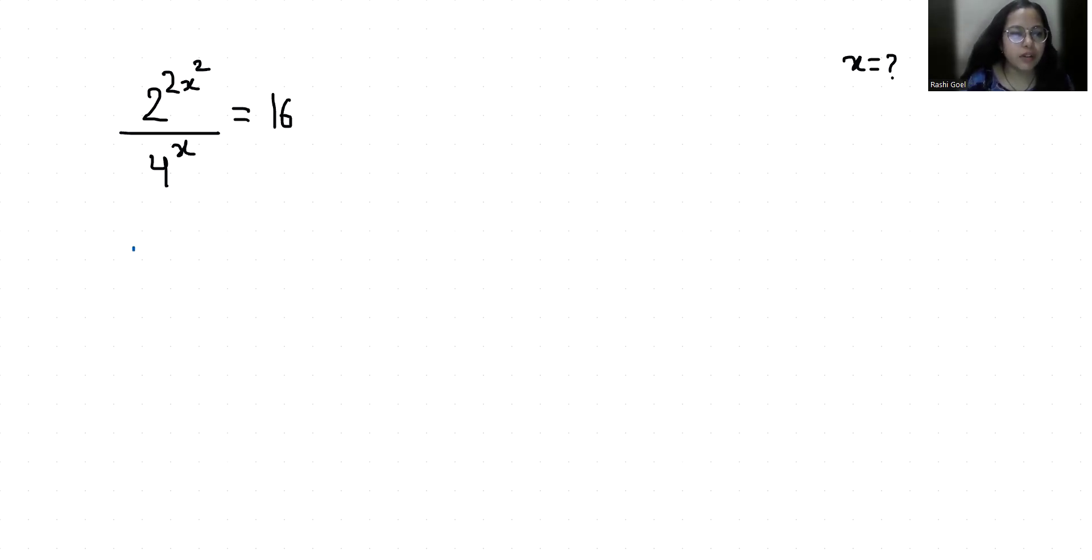So 2 power 2x square by 4, I can write it as 2 power 2 whole power x equals 16. Now according to exponent rule x power m power n, we can write it as x power mn or x power n power m.